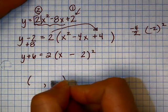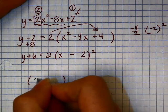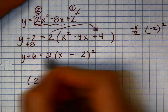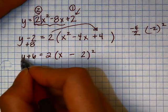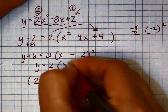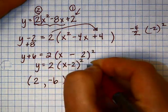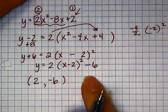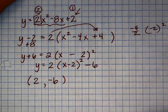So either way, my vertex is here at positive two. Remember, it's opposite of what's that. If my value is over here, I take the opposite. If I move it back, I just do what it says. So it's up to you what you want to do.